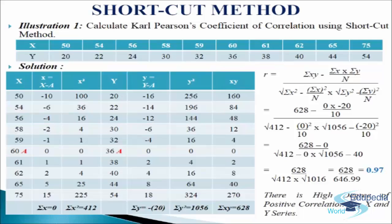We will add up the values and get sigma x equals to 0. In the third column we will write x square: minus 10 square comes 100, minus 6 square 36, minus 4 square 16, minus 2 square 4, minus 1 square 1, 0 square 0, 1 square 1, 2 square 4, 5 square 25, and 15 square 225. We will add up the values and get sigma x square equals to 412.